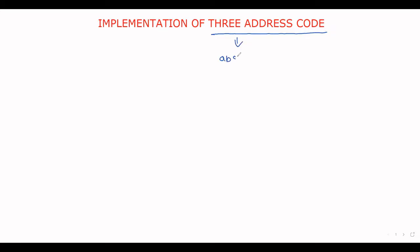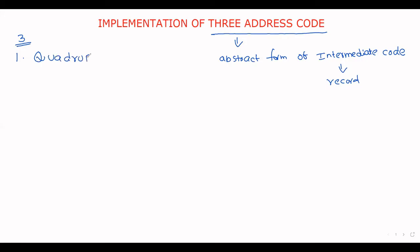Welcome to our channel. In this session we will discuss implementation of three address code. Three address code is an abstract form of intermediate code, and this intermediate code is implemented as a record with address fields. Three address code is represented by using three ways: the first one is quadruples, the second one is triples, and the third one is indirect triples.